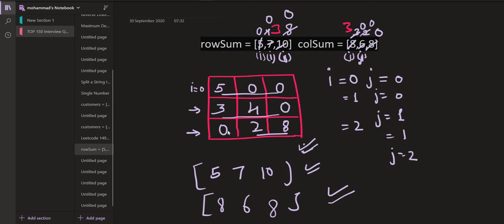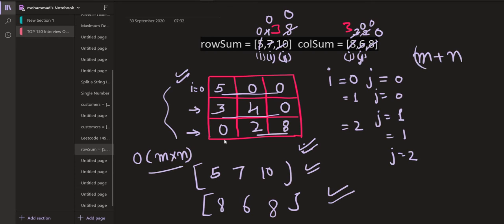Now let's discuss the space and time complexity. The space complexity is O(M×N) because we are generating the entire matrix — if we ignore the output, it would be a constant space solution. The time complexity is O(M+N) because at each position we are incrementing either i or j.